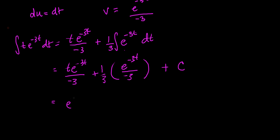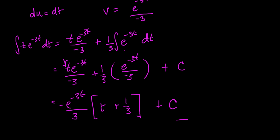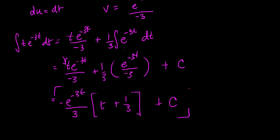Now look at what we have: t times e to the negative 3t over negative 3, plus one-third times the integral of e to the negative 3t. We already know that integral — it's e to the negative 3t over negative 3. Factoring out the common factor, we can write the answer as negative e to the negative 3t over 3, times the quantity t plus one-third, plus C. This can only be obtained using integration by parts.